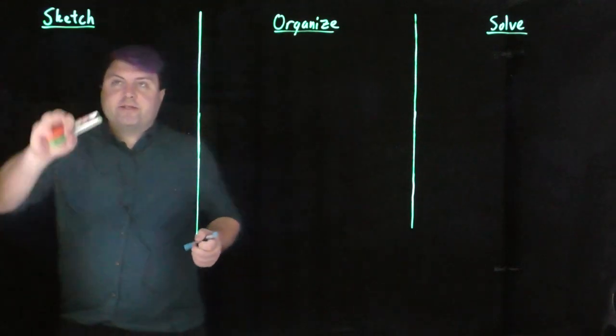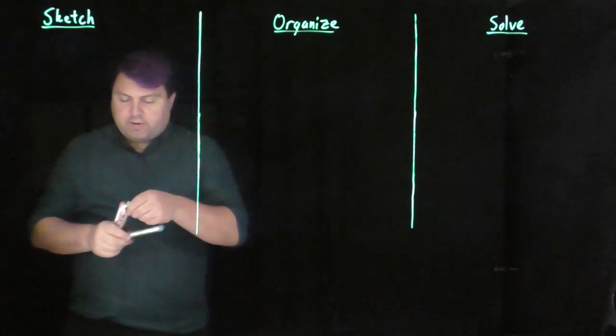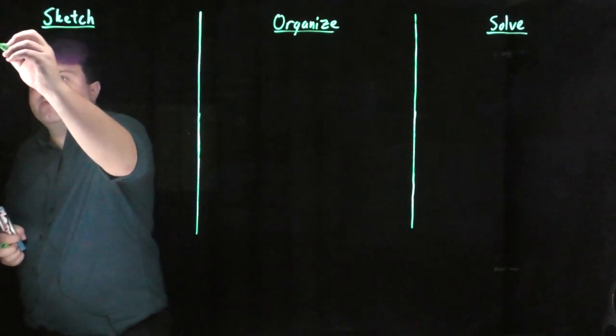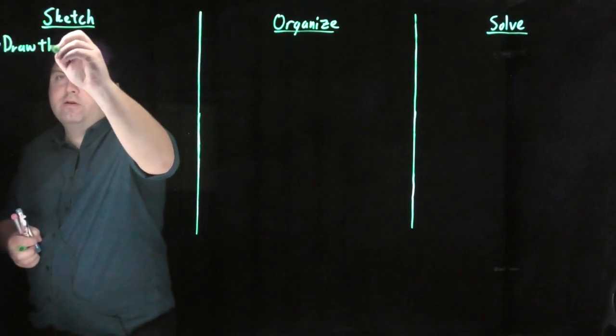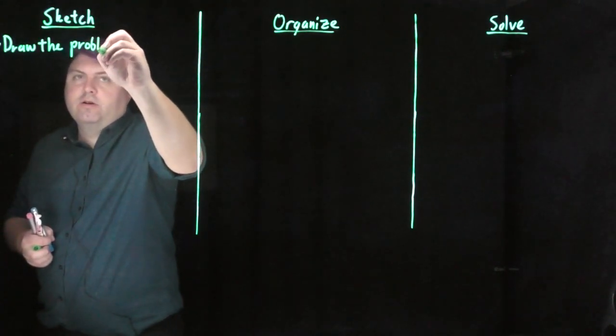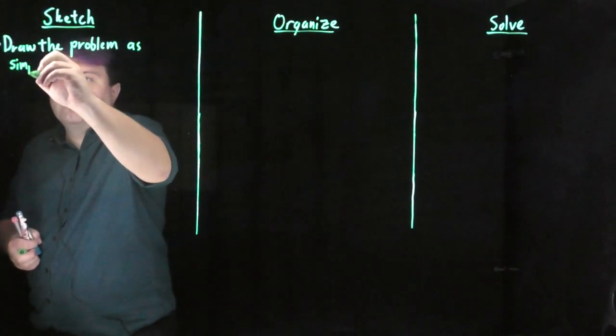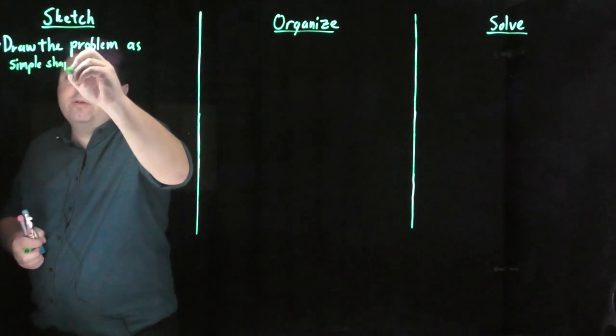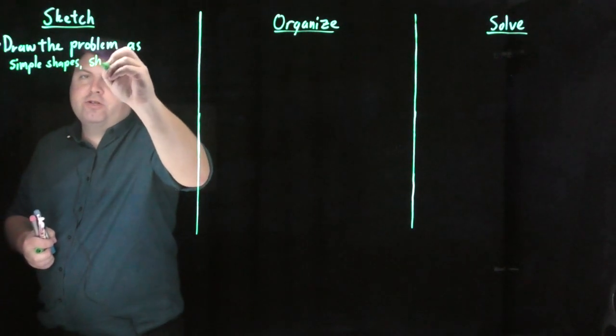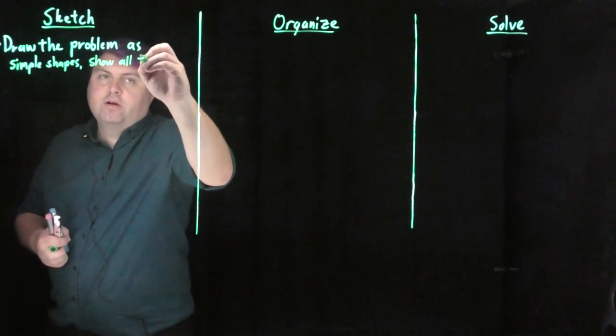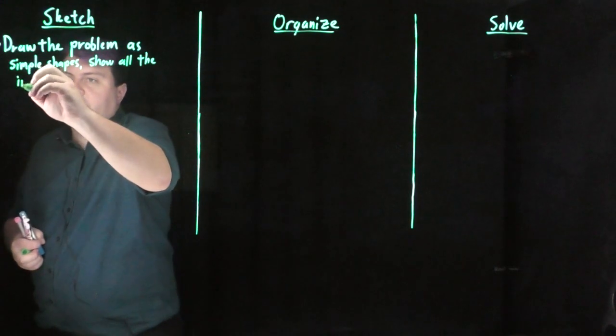We're always going to start with our sketch step when we're solving these problems, and how we're going to start is we want to draw the problem as simple shapes, and we want to show all the interactions contact points.